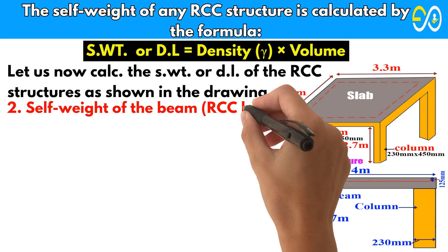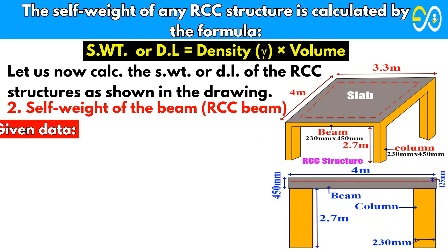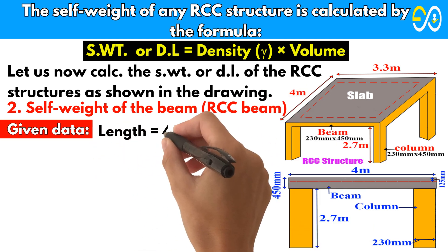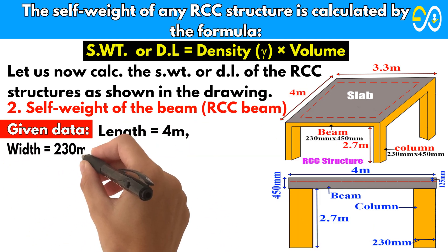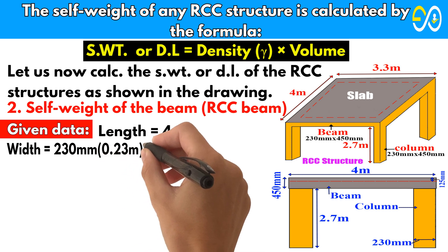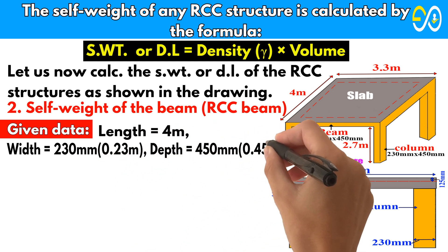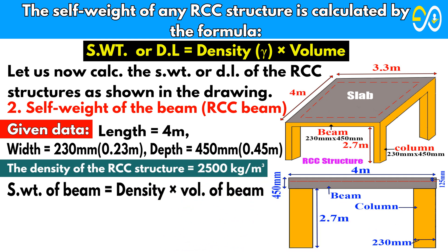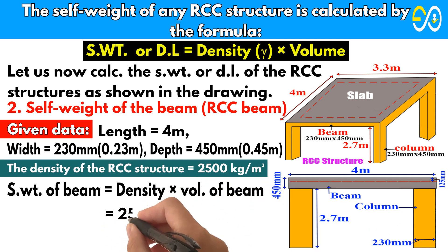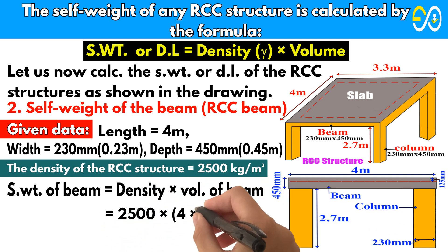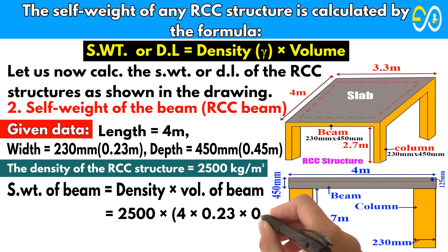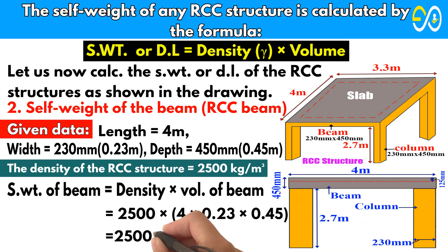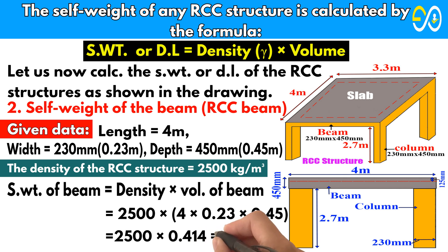Self-weight of the beam. Given data: length equals 4 meters, width equals 230 millimeters, depth equals 450 millimeters. Self-weight of the beam equals density times volume of the beam: 2500 times 4 times 0.23 times 0.45 equals 2500 times 0.414 equals 1035 kilograms.